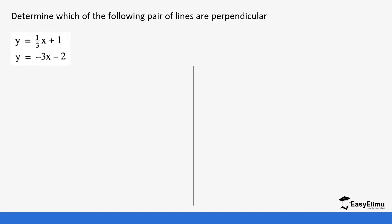So how are we able to determine that two lines are perpendicular if we are given two equations? What you are going to do is get the gradients of the two lines and then multiply those two gradients. If you get negative one, that tells us that these two lines are perpendicular. So let's do that.